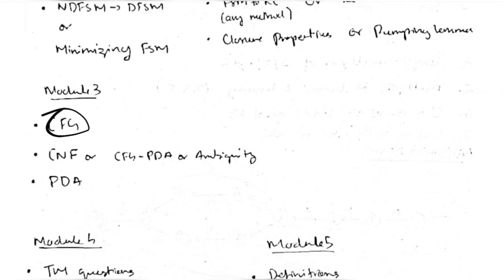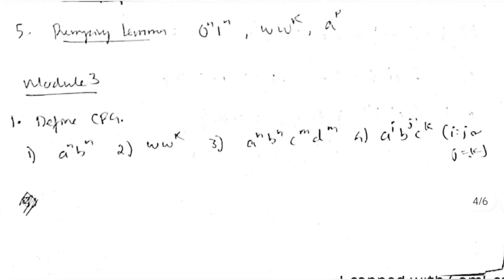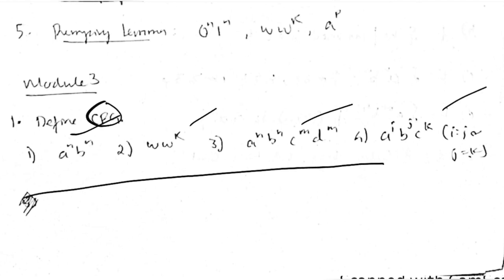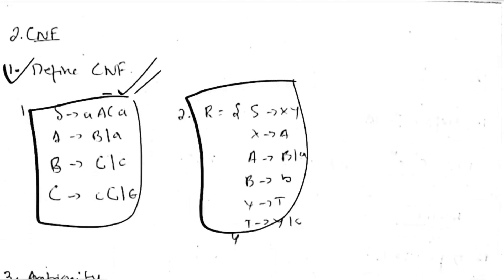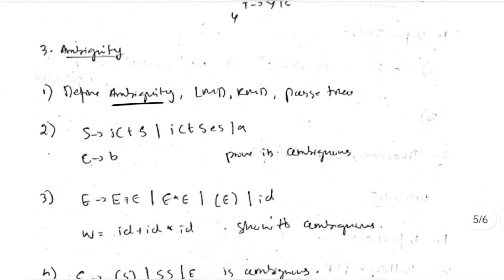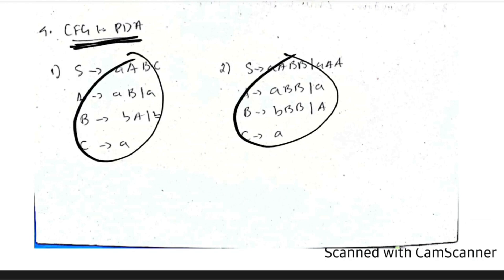For Module 3, CFG is definitely compulsory, and you have an 'or' option with CNF or ambiguity. For CFG, memorize the definition and solve the four most repeated questions. For CNF, define CNF and know the two most repeated questions — one is very important. For ambiguity, memorize the definition and the two repeated questions.